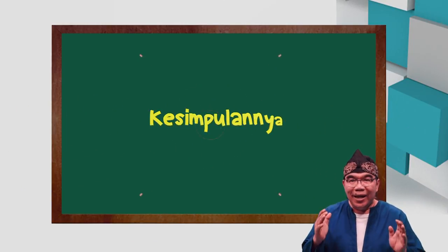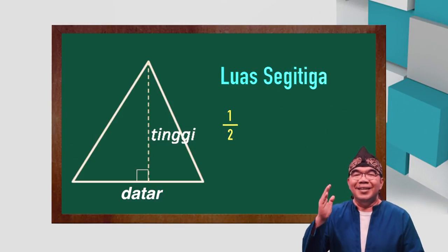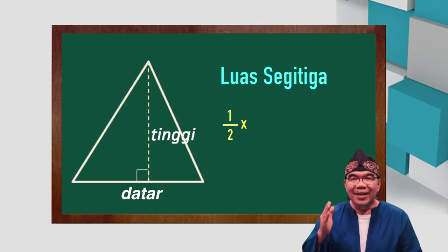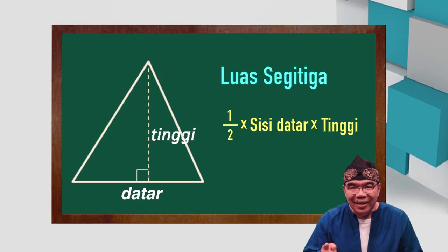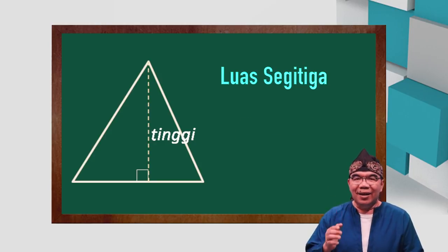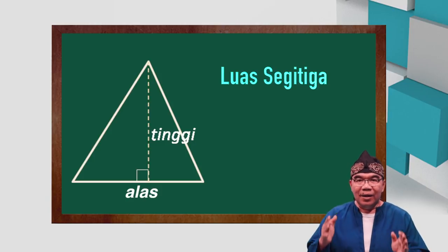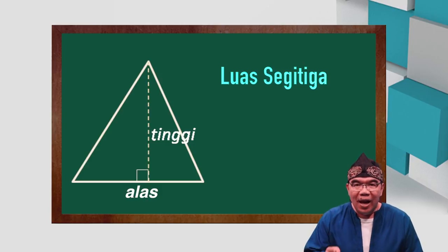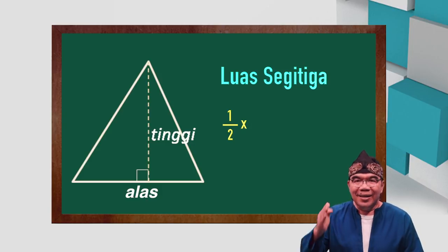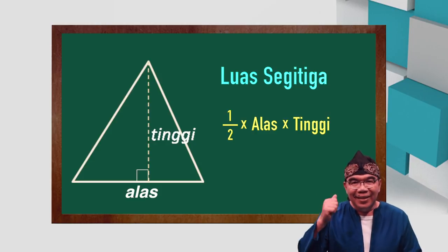Jadi kesimpulannya, anak-anak, luas segitiga adalah setengah dikali sisi datar dikali tinggi. Jadi, jika sisi datar kita ganti jadi alas, maka kesimpulan yang harus kalian ingat: luas segitiga adalah setengah kali alas kali tinggi. Jelas?